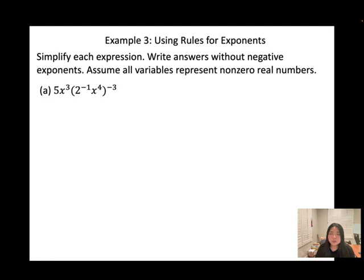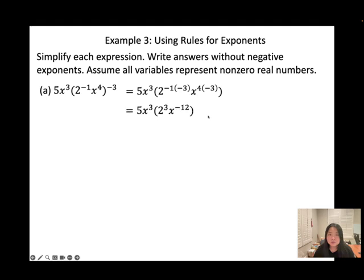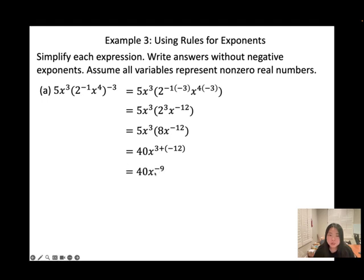Now we use the quotient rule and negative exponents together — make sure to write your answer without negative exponents. For the first one, distribute the negative 3 to both the 2 and 4 first. So you get 2 to the power of 3 times x to the power of negative 12. Since they have the same base x, add the exponents: 3 plus negative 12 equals negative 9. That's a negative exponent, so flip to the bottom: 40 over x to the power of 9.